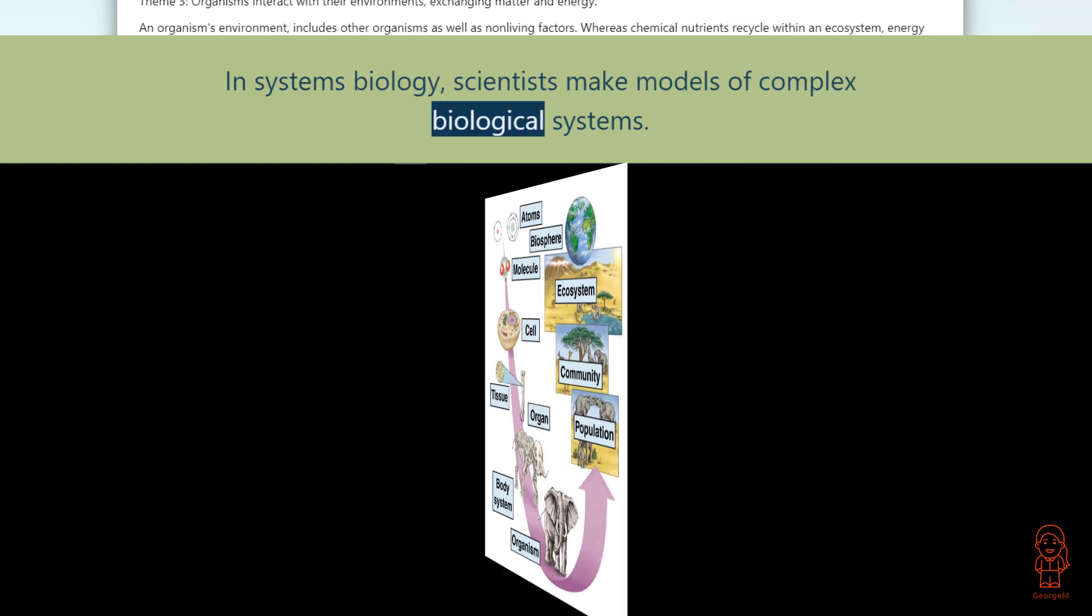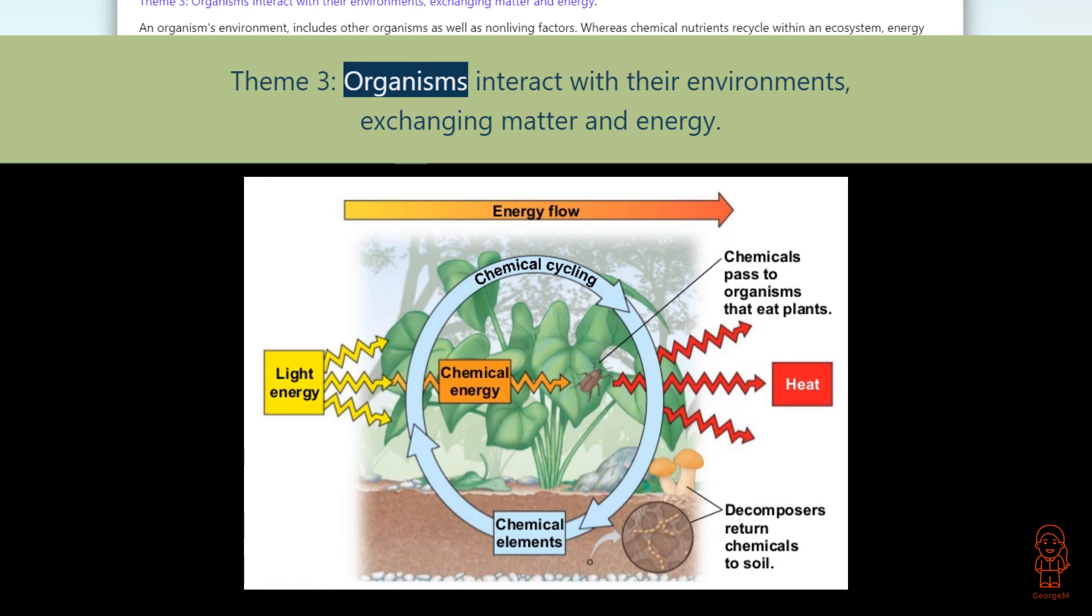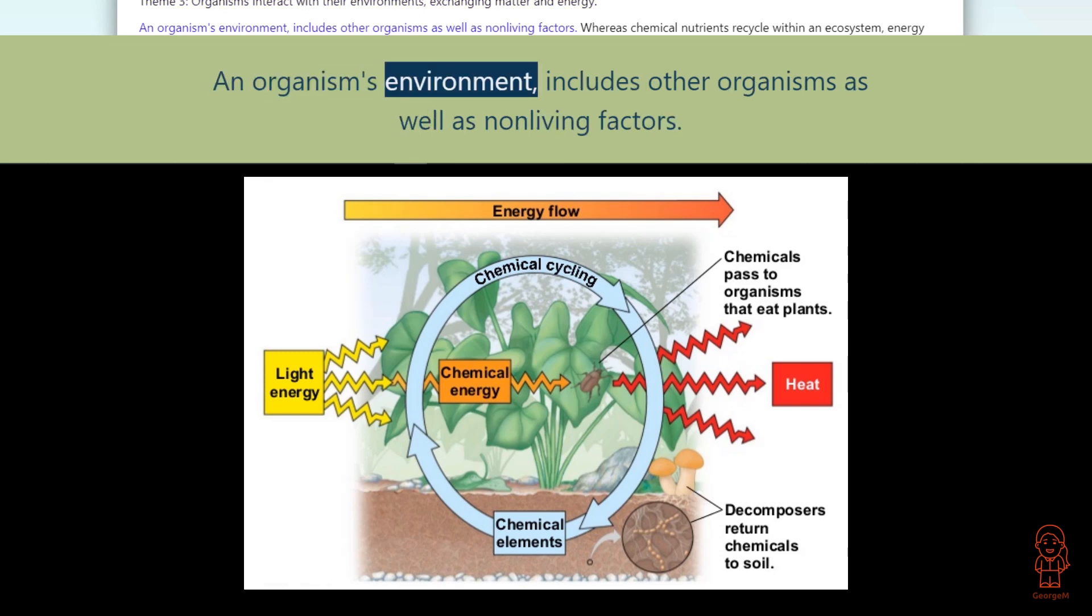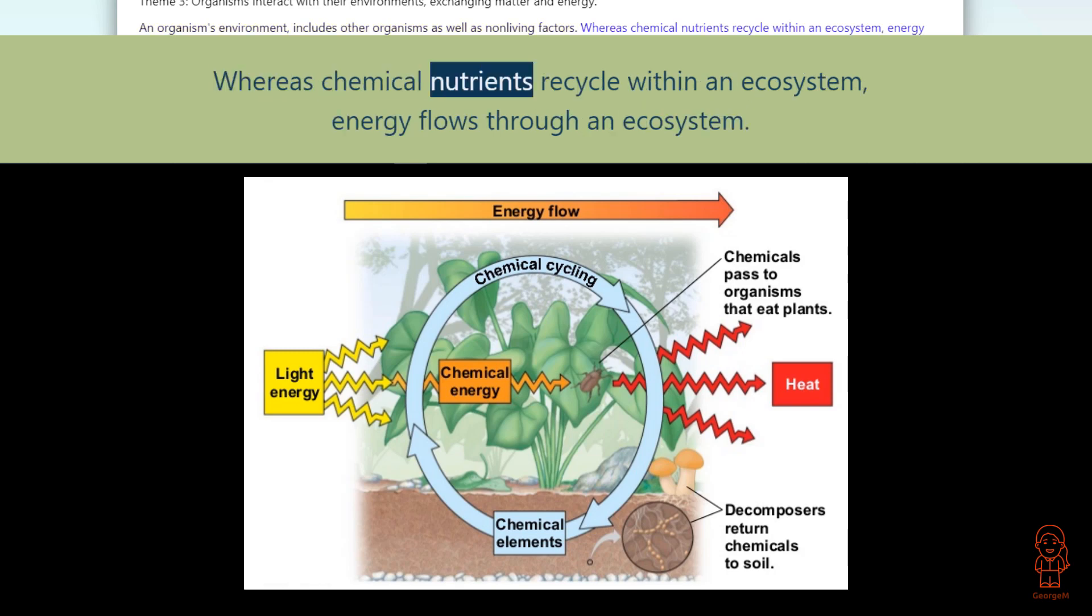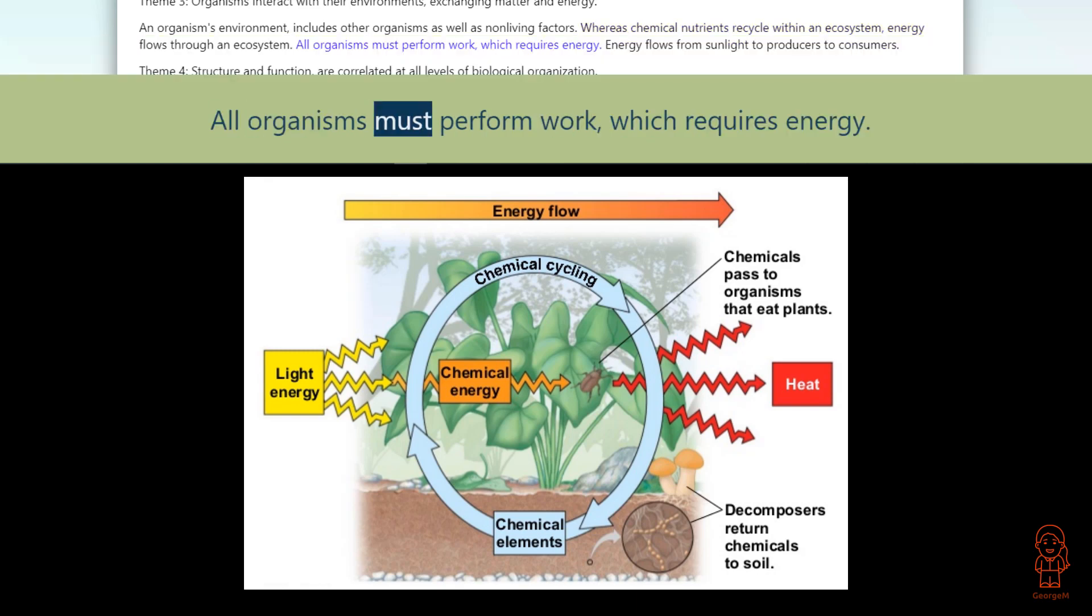Theme 3: Organisms interact with their environments, exchanging matter and energy. An organism's environment includes other organisms as well as nonliving factors. Whereas chemical nutrients recycle within an ecosystem, energy flows through an ecosystem. All organisms must perform work, which requires energy.